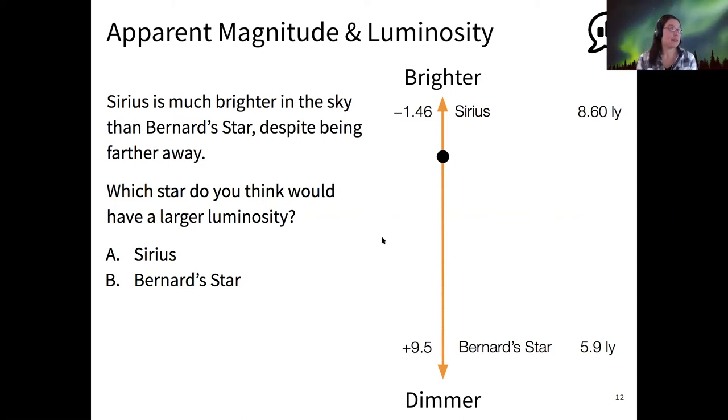You can kind of think of this as everyone's been on a highway at night, right? And distant cars have very dim headlights. Then they get brighter and brighter as they get closer to you until they blind you. And so it's just that same idea. And we know that most cars have the same intrinsic brightness of their headlights. So then based on the brightness, we can estimate how far away the car is. The only hiccup here is that unlike car headlights, stars come in a wide variety of different wattages, different luminosities. So Sirius is indeed the more luminous star.